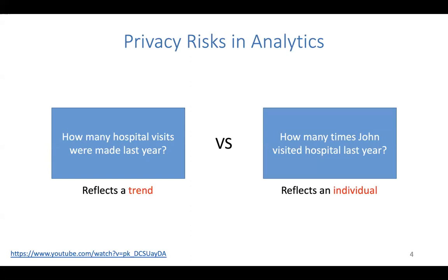We talked about privacy attacks last week with specific examples, but in general we'd like to first define privacy mathematically, since there could be many other forms of attacks besides membership inference and attribute disclosure. The goal is to formulate what privacy risk is mathematically, evaluate it quantitatively, and then discuss how to prevent it. Differential privacy provides a statistical framework to evaluate privacy risk in analytics.